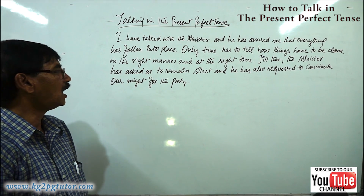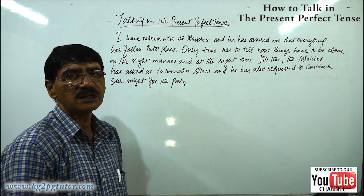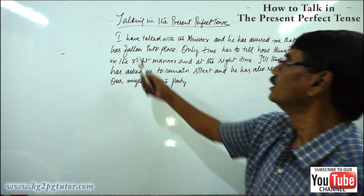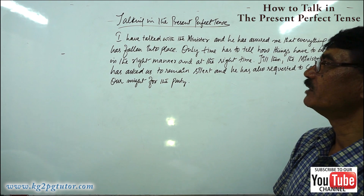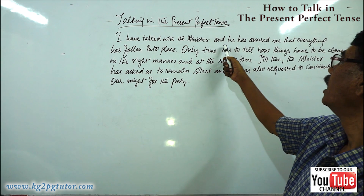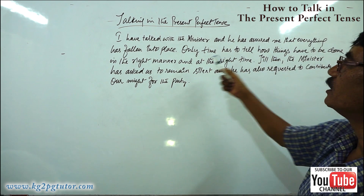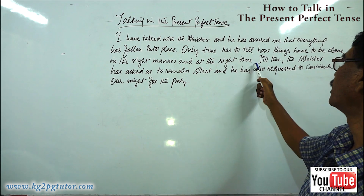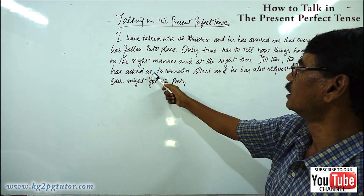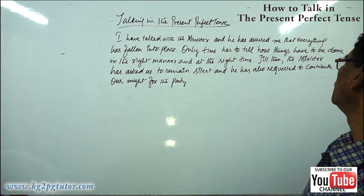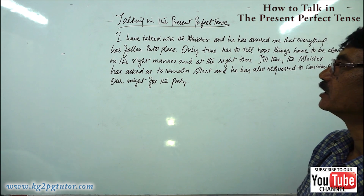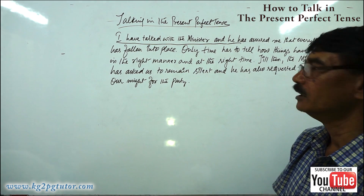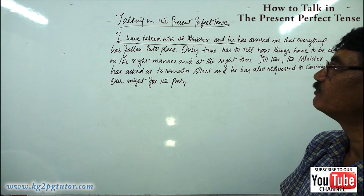Now what will happen if you are going to do the same thing using the third person singular? Let's take for example 'she'. Here we see she has talked — we don't use 'have' but we use 'has'. She has talked to the minister and he has assured her that everything has fallen into place. Only time has to tell how things have to be done in the right manner and at the right time. Till then the minister has asked her to remain silent and he has also requested to contribute our might for the party. You are going to change only 'I' to 'she has talked with the minister' — other things will remain in the same manner.